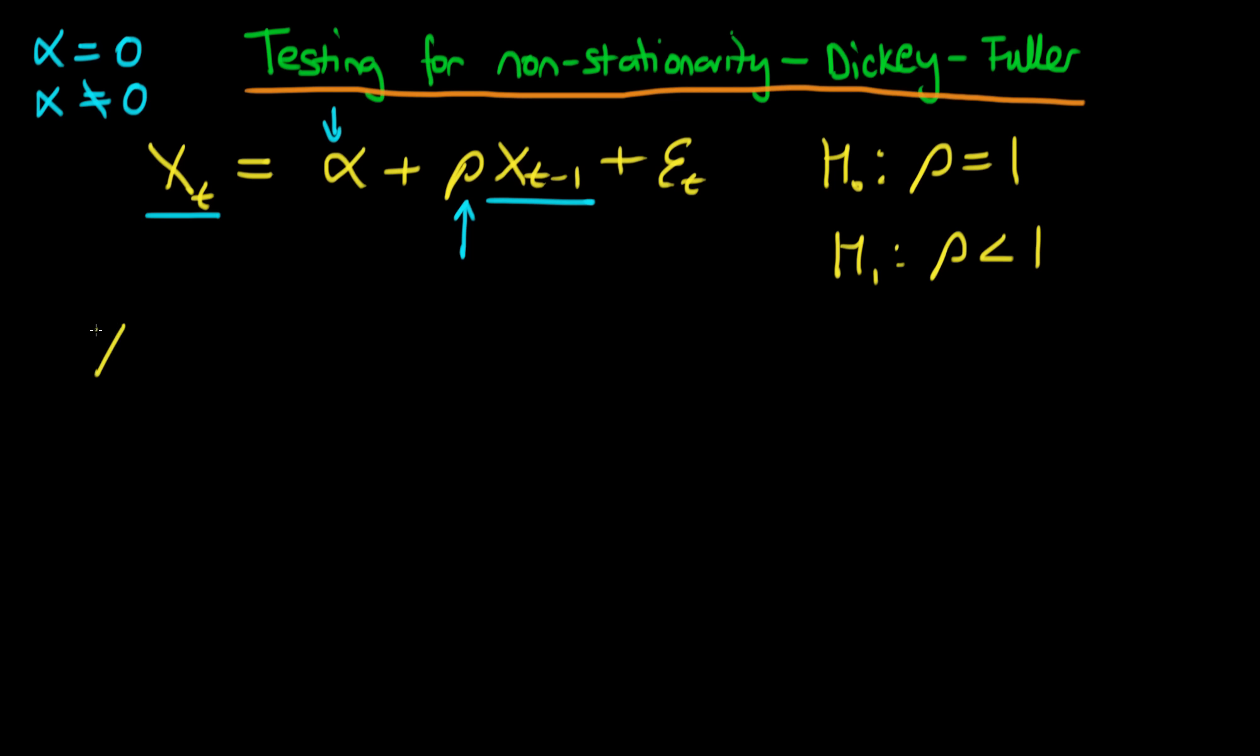A better approach is to take xt minus 1 from both sides, so we have xt minus xt minus 1 equals alpha plus open bracket rho minus 1 times xt minus 1 plus et.